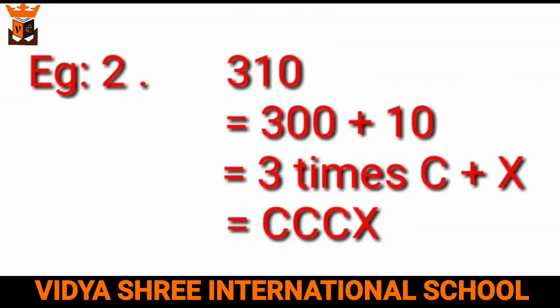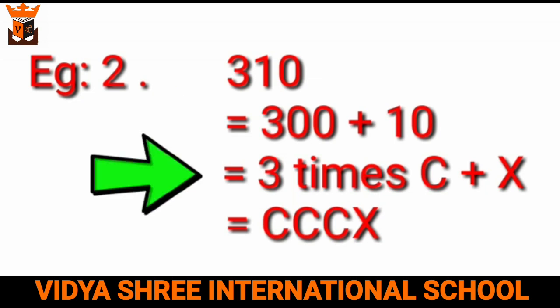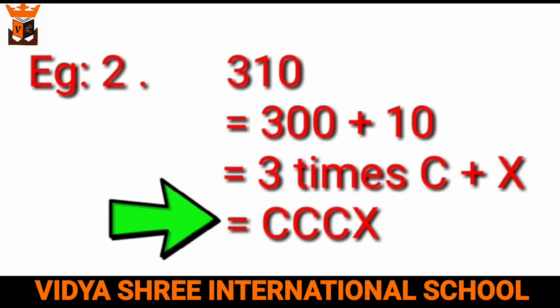Now let us take the second example, 310. We can write 310 as 300 plus 10. For the number 100, we have the symbol C, so 300 means 3 times C. And for the number 10, we have the symbol X. So we can write 310 as CCCX.